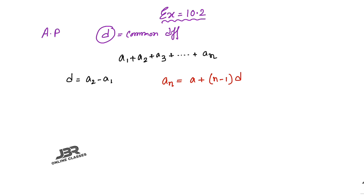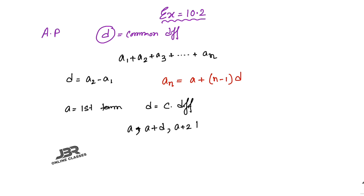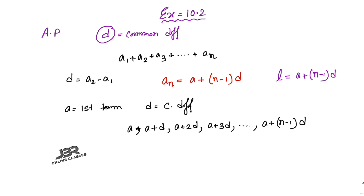If a is the first term and d is the common difference, then the AP series is: a, a+d, a+2d, a+3d, ... , a+(n−1)d. The last term l equals a + (n−1)d. So the formula for the general term and the formula for the last term are both a + (n−1)d.